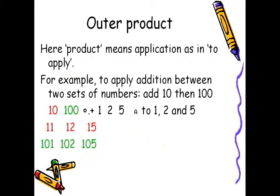Outer product is a function in APL also. Here product means application of the function — as in, to apply. For example, to apply addition between two sets of numbers, say ten and one hundred, and three numbers one, two, and five, I would use the following syntax: ten, one hundred, jot — which is the little character you see there — dot plus one, two, five. Meaning that ten will be added to one, two, and five on the first row, resulting in a matrix of two rows and three columns.